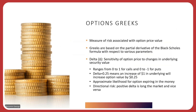So what are the option Greeks? Option Greeks are a measure of risk associated with the option price value. They're based on the partial derivative of the Black-Scholes formula with respect to the various parameters that can change the option price value. I'm going to focus on Delta initially, because that's the Greek that is most often used. Delta is the derivative of the Black-Scholes with respect to the underlying security value, and it ranges from zero to one for calls and zero to negative one for puts. A Delta of 0.25 means that an increase of $1 in the underlying will increase the option value by 25 cents.